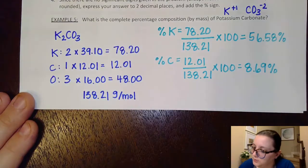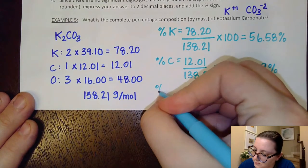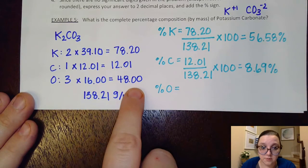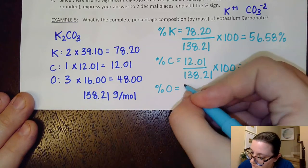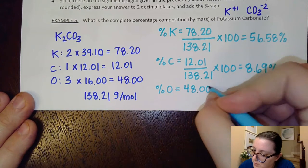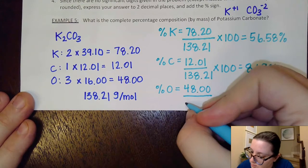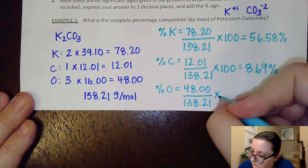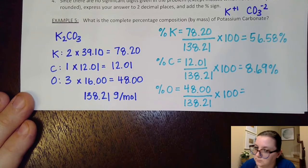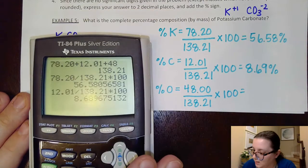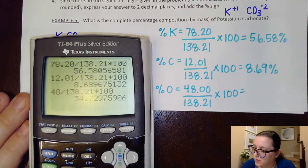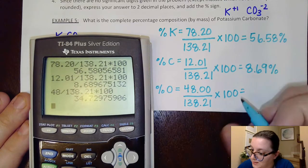And then last but not least here, we're going to do the oxygen. So again, we want to use the 3 times 16, the 48 here, divided by the total molar mass. All right, so let's go ahead and plug that in. And we see that gives us right around 34.73%.